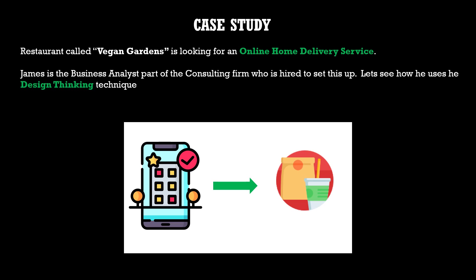James meets the restaurant owner Jane, who has the idea for an online home delivery service. She starts off with a big list of requirements: we need a mobile app for both Android and iOS, we need an online web portal working with all the browsers, and the list went on. Jane also told him she had a limited budget and wanted to reuse the profit from the home delivery service to make the app better.